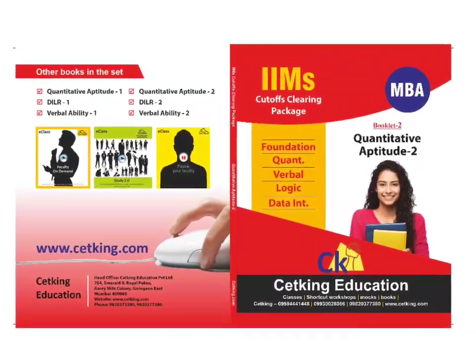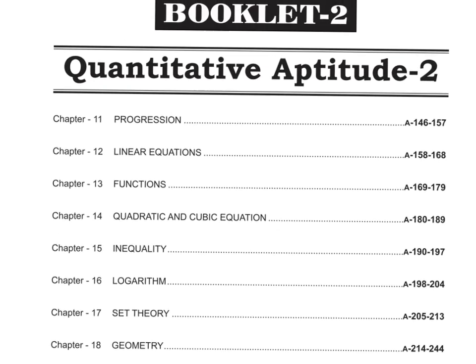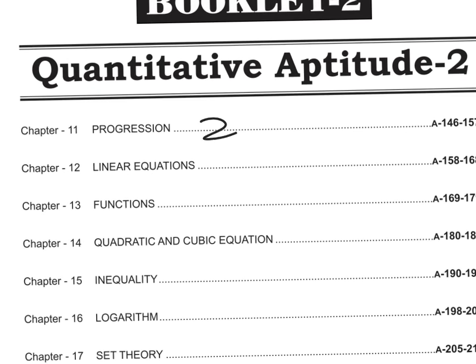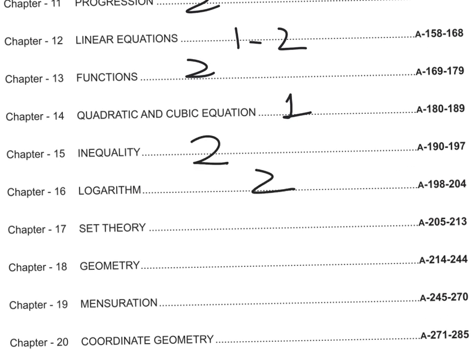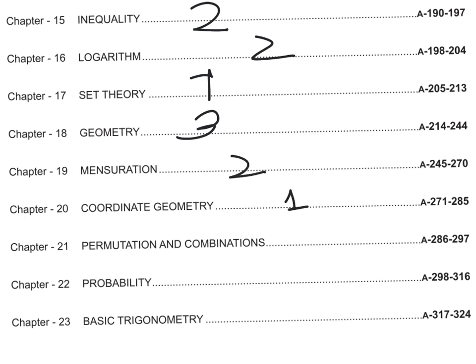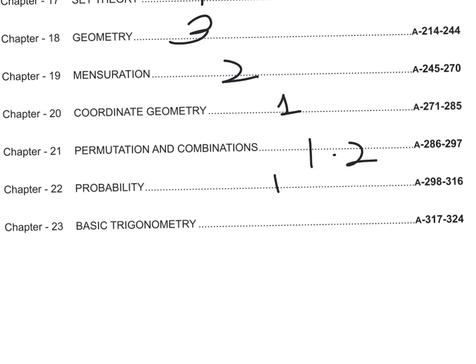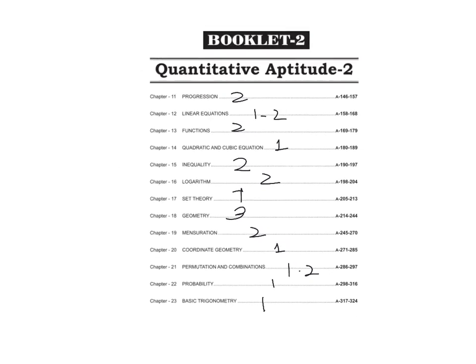We then move to phase two, which is Book 2. The ideal target should be the first two to three months to complete Book 1, then the next two months to complete Book 2. Book 2 covers all advanced topics: AP/GP/HP series, equations 1-2 questions, functions 2 questions, quadratic equations 1 question, inequalities 2 questions, logarithms 2 questions, set theory 1 question, geometry 3 questions, mensuration 2 questions, coordinate geometry 1 question, permutation and combination 1-2 questions, probability 1 question, trigonometry and geometry combined normally 1 question.